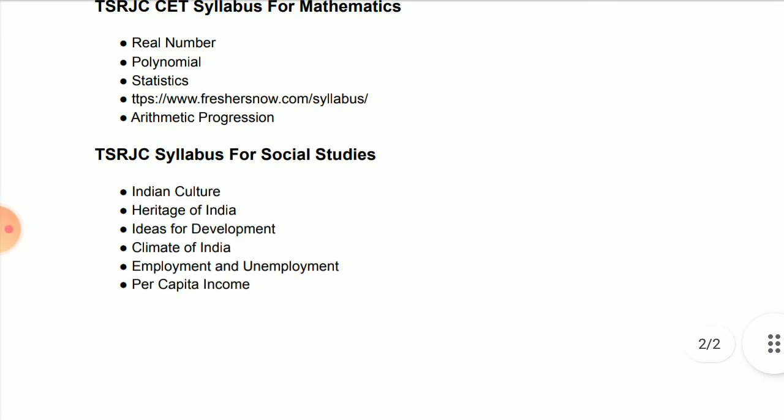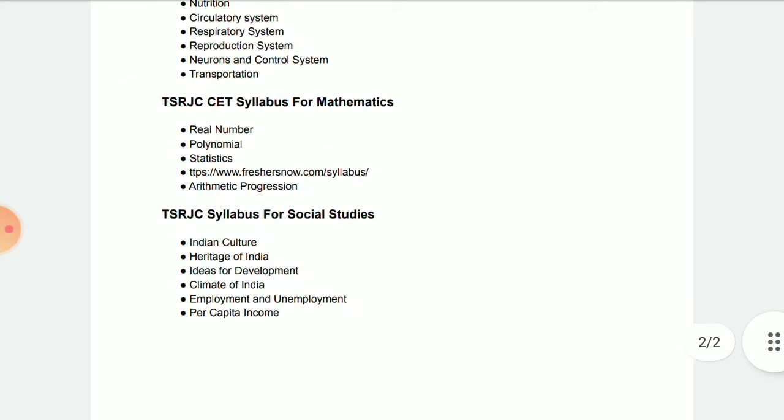For MEC students, Social is included. In Social, there are six chapters: Indian Culture, Heritage of India, Ideas of Development, Climate of India, Employment and Unemployment, and Per Capita Income.